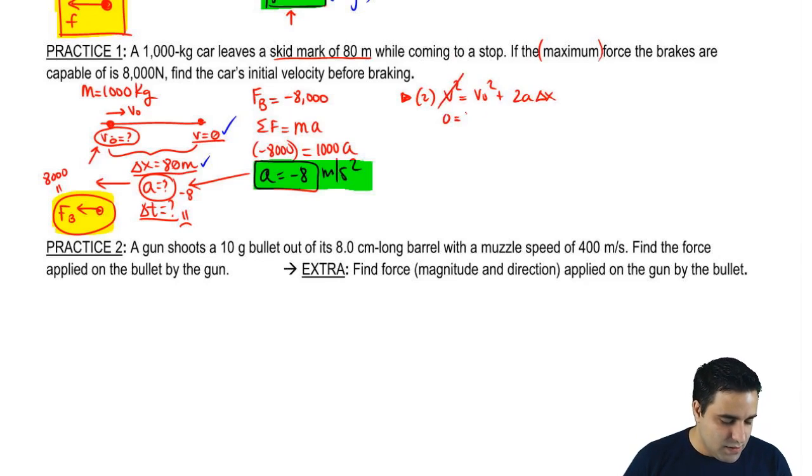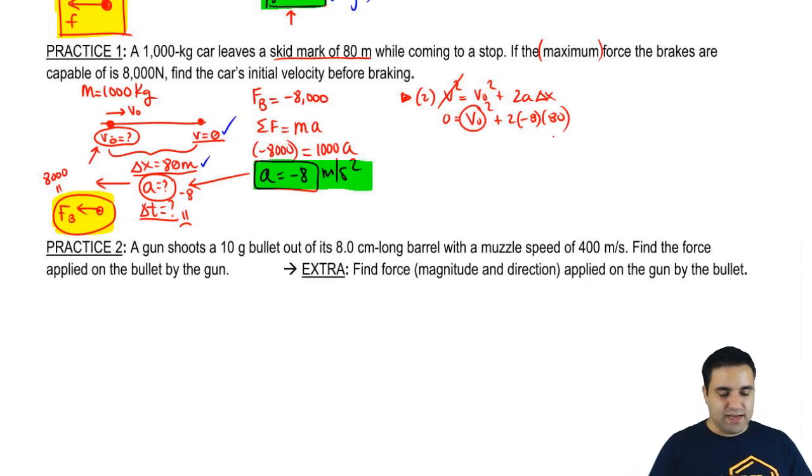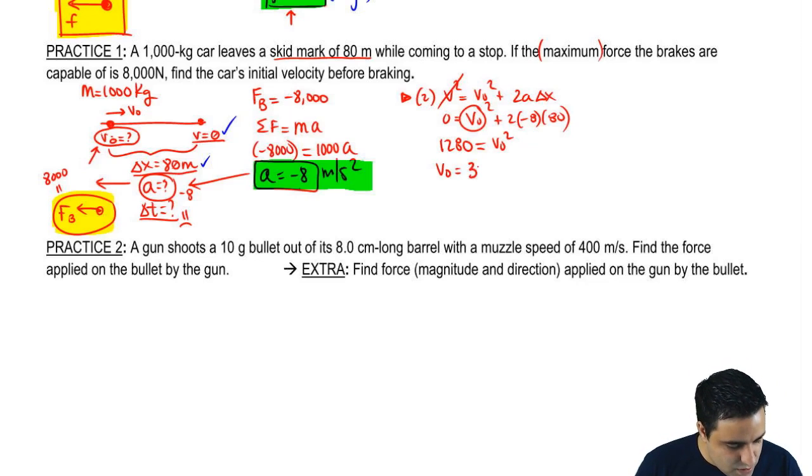The final velocity is 0. The initial velocity is what I'm looking for. So it looks like this. Acceleration negative 8, delta x is 80. If you multiply all this, I get 1280. So this goes over to the other side as a positive 1280. So the initial velocity is the square root of that, which rounds to 35.8 meters per second.